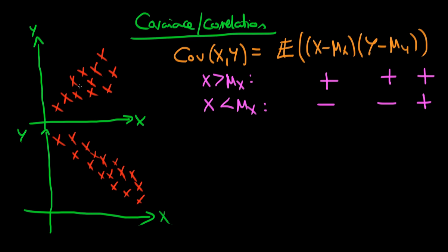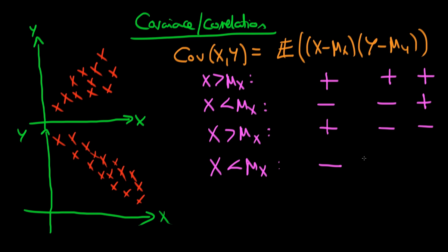Now let's think about the case whereby there is a negative relationship between X and Y. If X is greater than its mean, so the first parenthesis is positive, Y is likely below its mean, so the second parenthesis is likely negative. So overall we get a negative value for the covariance. And if X is less than its mean, then the first parenthesis is negative and Y is likely greater than its mean, so the second parenthesis is positive — giving a negative overall. So the covariance is a measure that, if positive, indicates a positive relationship between X and Y: as X increases, Y tends to increase. And if the covariance is negative, as X increases, Y tends to decrease.